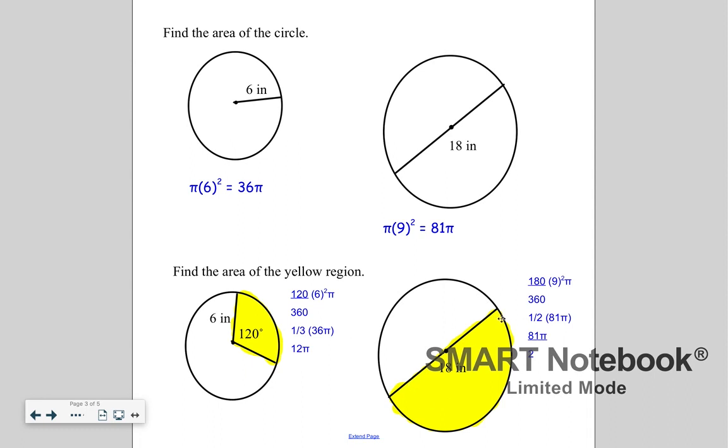Over here, it's a diameter, so it's 180 over 360. The area of the whole circle is 9 squared pi. So I'm basically finding half of the area of the whole circle. So 81 pi over 2. If you have 40.5 pi, that's also okay.